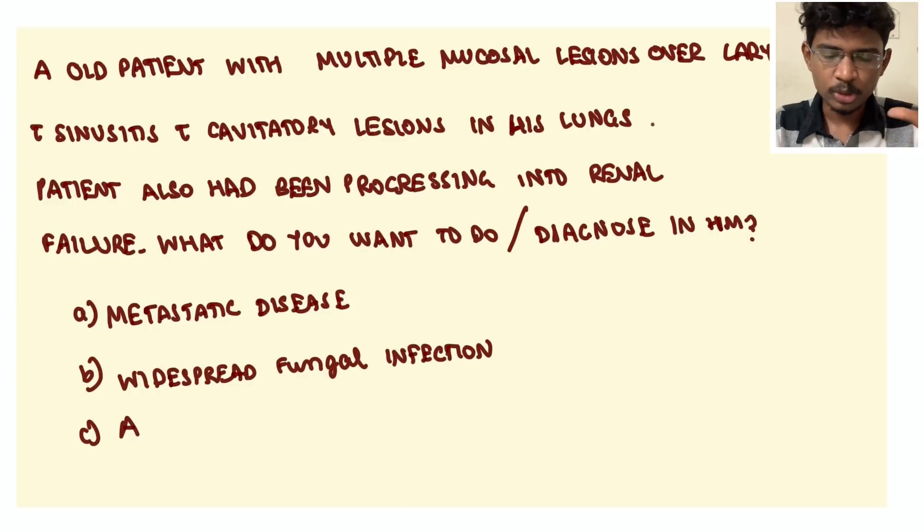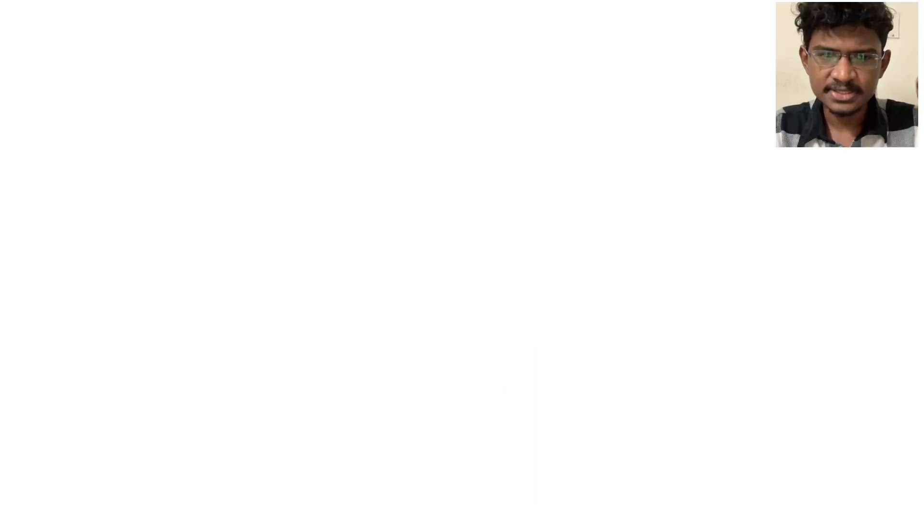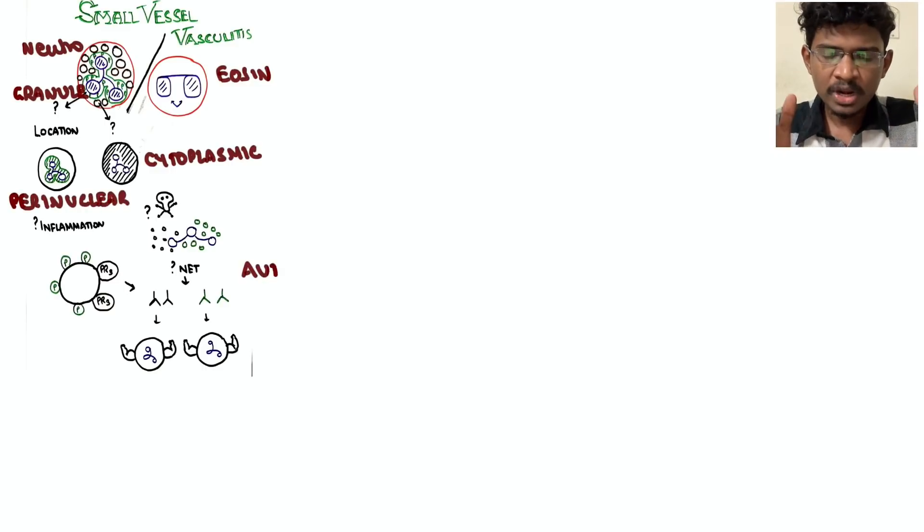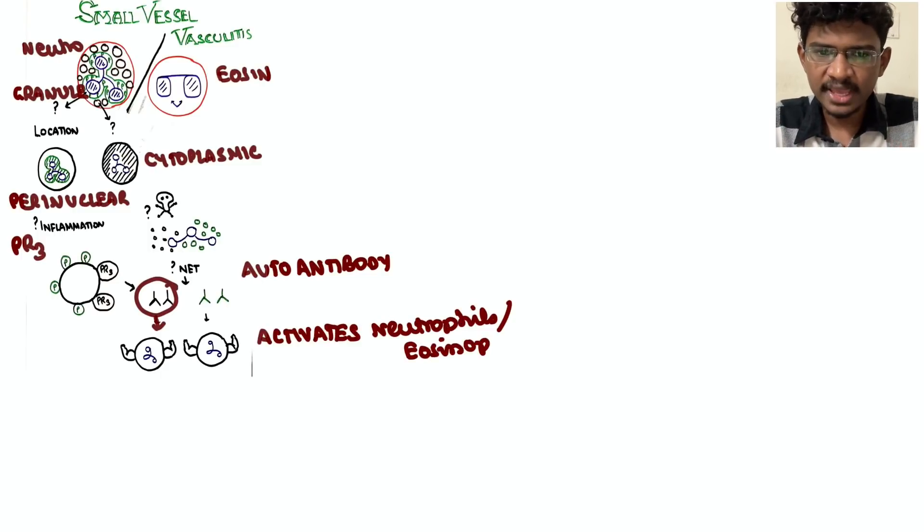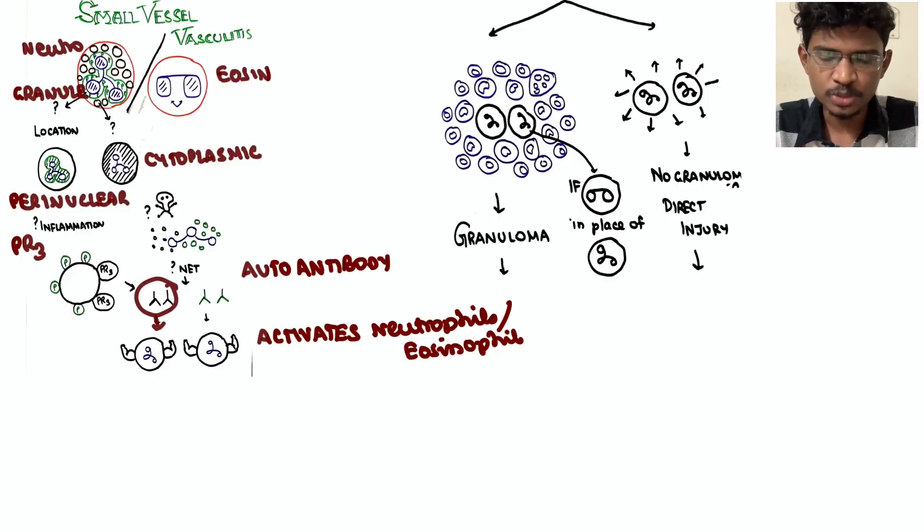Let's see this small vessel vasculitis. Actually, how does this small vessel vasculitis happen? First, if you see the neutrophil and the eosinophil, granules are there. One will be the perinuclear granule and one will be the cytoplasmic granule. There are auto-antibodies which are formed against these granules. If it is formed against this PR3, proteinase 3, which is the perinuclear granules, then those are the c-ANCA. This will affect the neutrophils by activating the neutrophils.